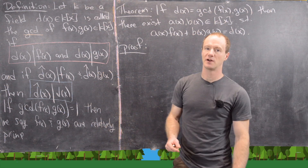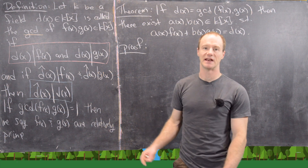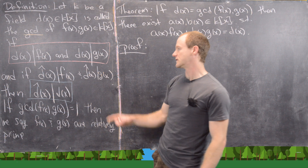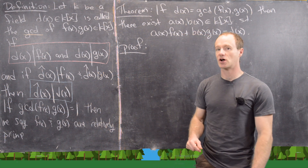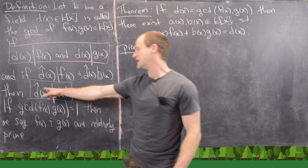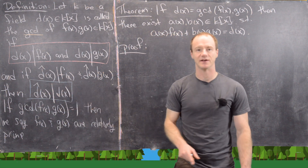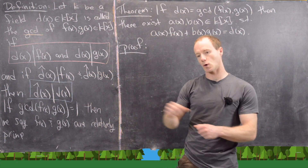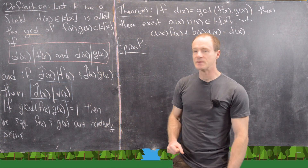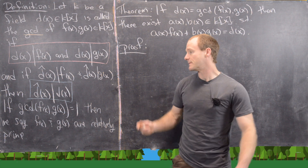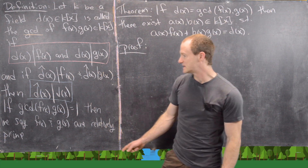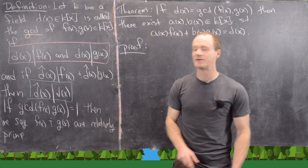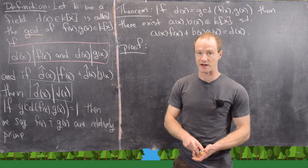Now we need the property that it is the greatest such common divisor. So if D̂(X) also divides F and G — in other words it's also a common divisor — then D̂ divides D(X). That makes D̂ smaller than D(X), so we're ordering by divisibility, which is a partial ordering. Furthermore, two polynomials are relatively prime if their GCD is 1, the same as we do with integers.